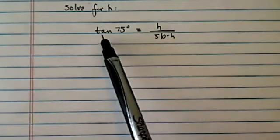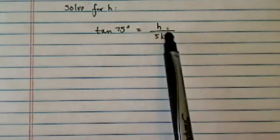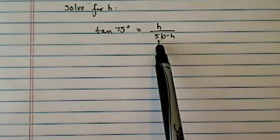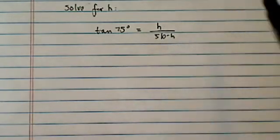We have an interesting problem to solve here. We have tangent of 75 is equal to h divided by 550 minus h.